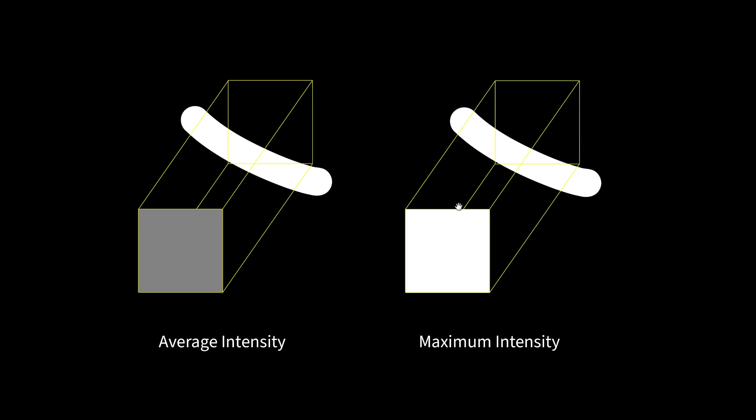On the other hand, with a MIP, the pixel value that's displayed is not the average intensity of the whole voxel — it's the maximum intensity in that voxel.